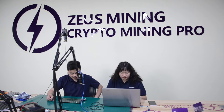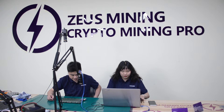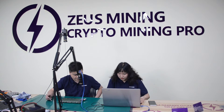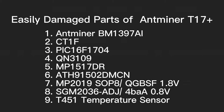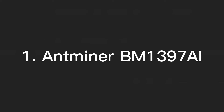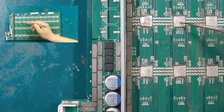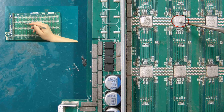Hello everyone. It is my pleasure to introduce the main easily damaged parts on the hash board of the Antminer T17+. The first chip is an ASIC chip, the Antminer BM1397AI. Damage to this chip may be one of the reasons for the failure of the T17+ hash board.